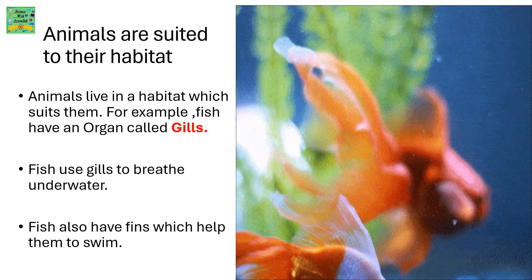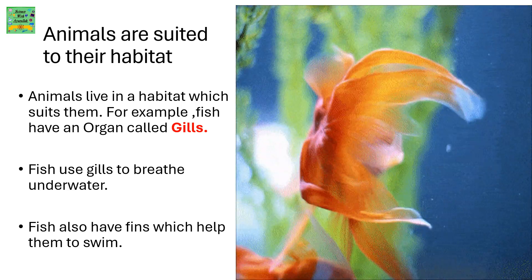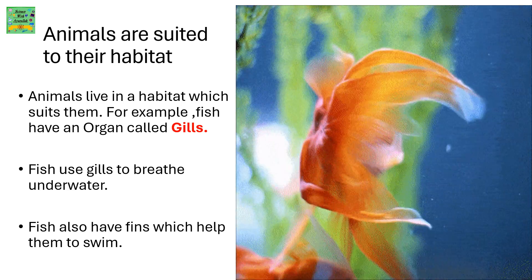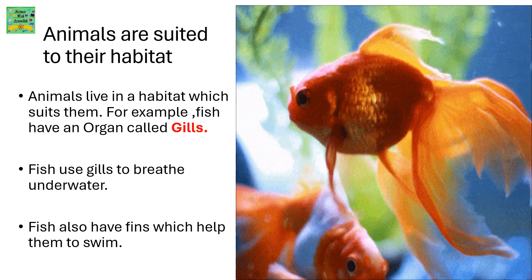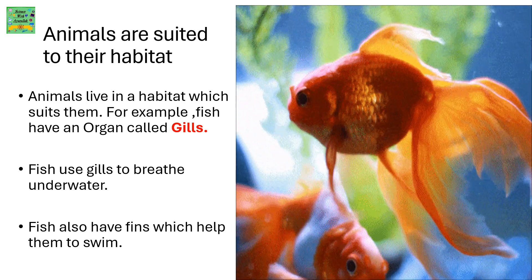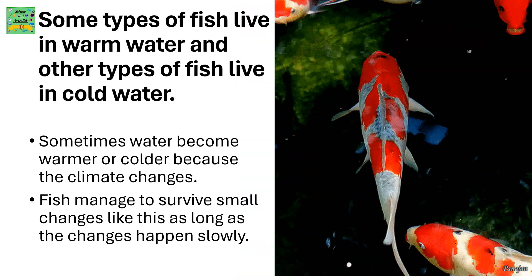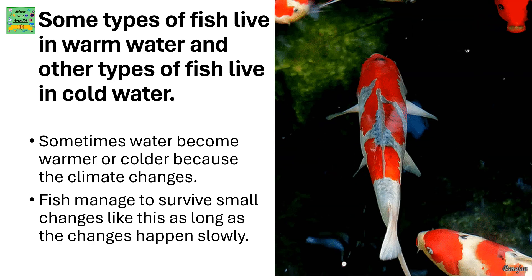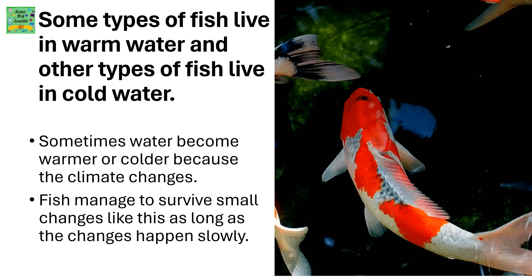Animals are suited to their habitat. Animals live in a habitat which suits them. For example, fish have an organ called gills. Fish use gills to breathe underwater. Fish also have fins which help them to swim. Some types of fish live in warm water and other types of fish live in cold water.